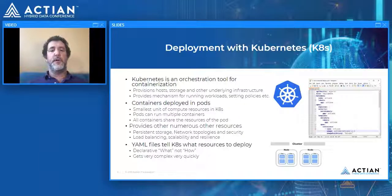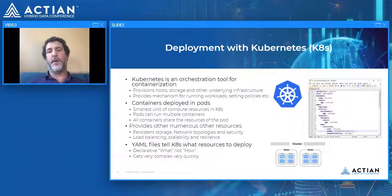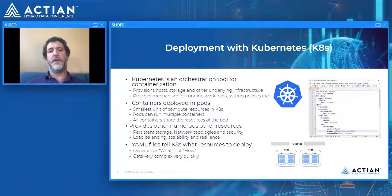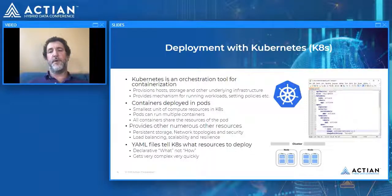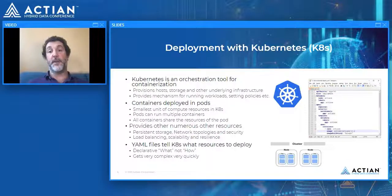The way you tell Kubernetes which resources to deploy is with YAML files. YAML is a declarative language where you tell Kubernetes what you want to deploy and it works out how. Because every single resource — from the container to the image to any endpoints or storage — requires a separate YAML file, and multiple deployments of similar applications each need their own set, it can get very complex very quickly.